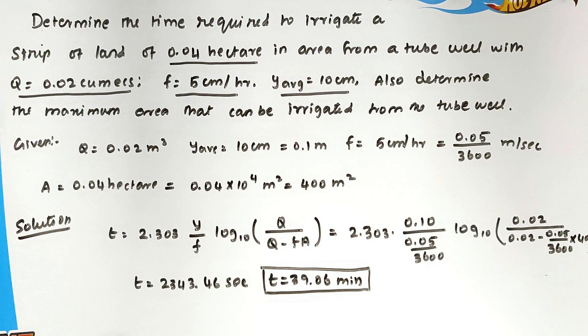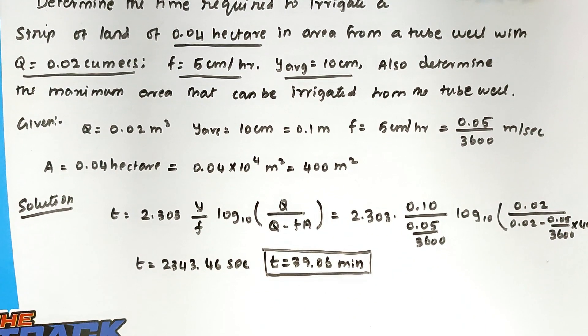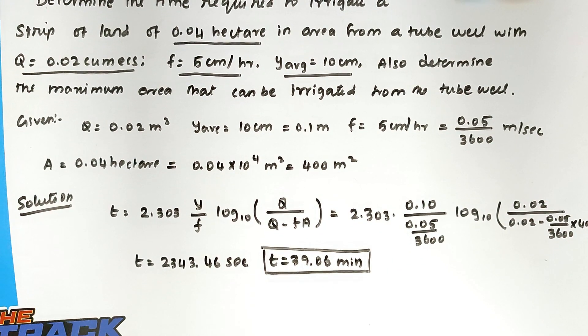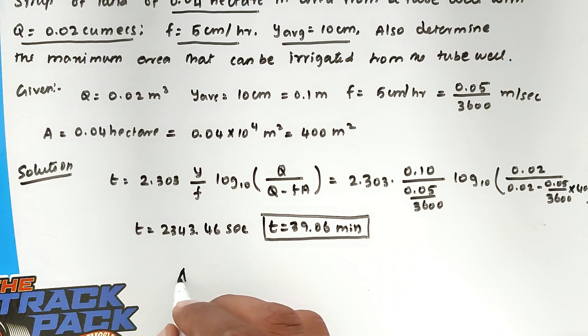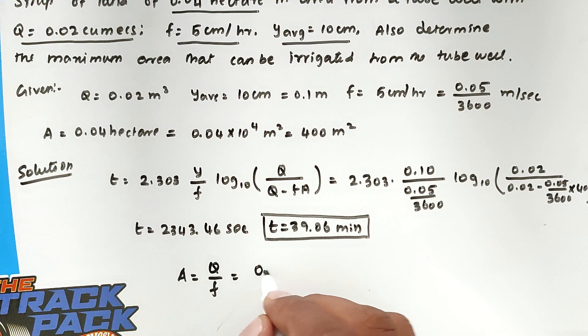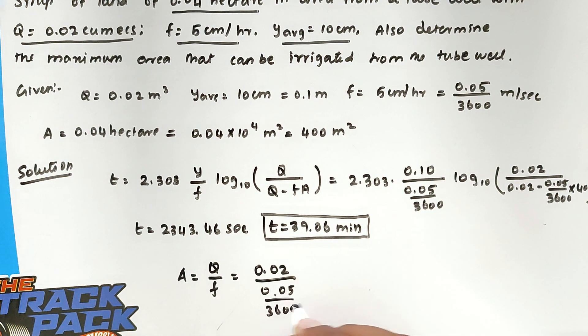Next question is area, the maximum area that can be irrigated. The formula is A = Q divided by F. So Q value is 0.02 divided by F value 0.05 divided by 3600.